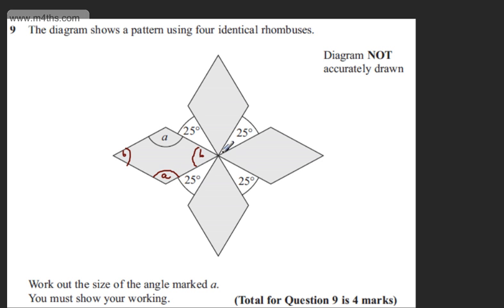One way we could do this is to use the fact that angles around a point equal 360. So we can say that B will be equal to 360 minus four lots of 25, divided by four.